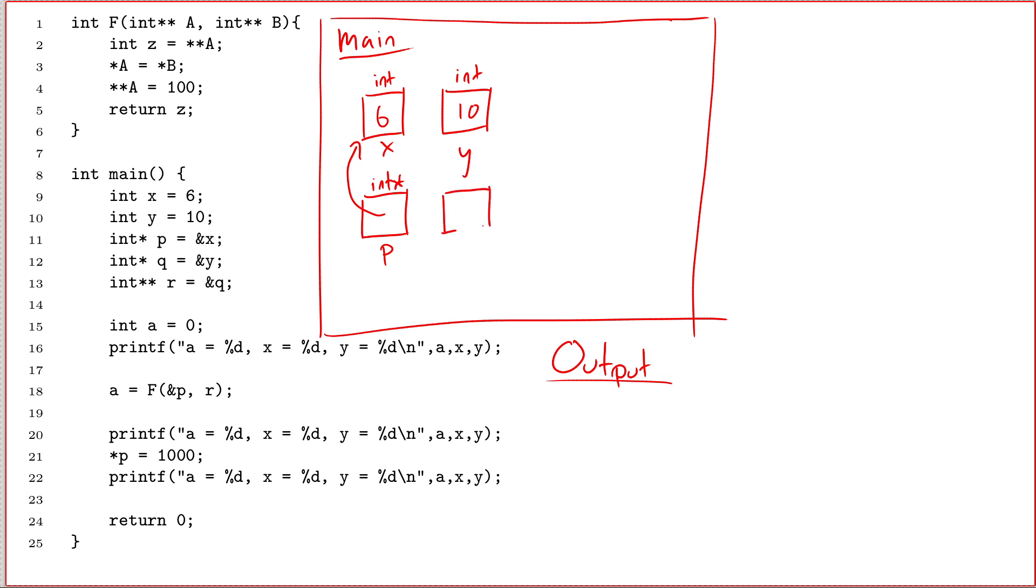And then int star q equals ampersand y. So there's q, and it's int star. And just like before, y is an int, so it's valid for me to write something like q equals ampersand y. And that means it contains an arrow pointing at y. And then I'll put it over here.